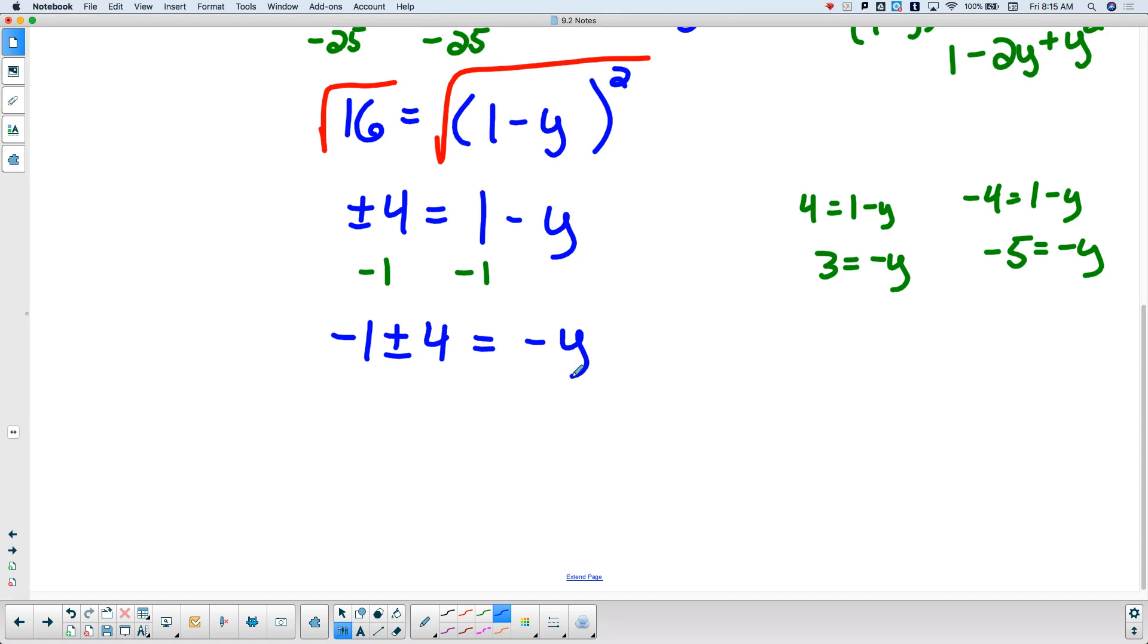Over here, though, it's going to be negative 1 plus or minus 4 equals negative y. So then negative 1 plus 4 gets me 3, and negative 1 minus 4 gets me negative 5. So now I'm in the same spot. Savannah, are we done? Why not?